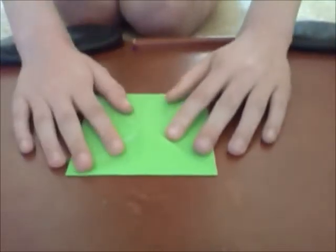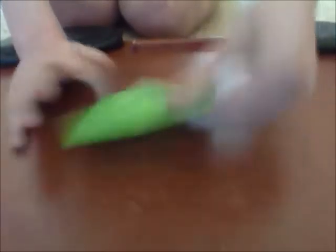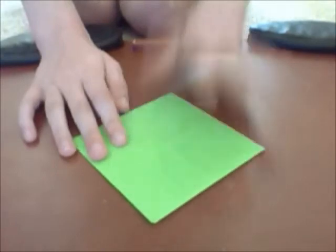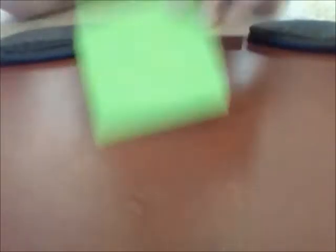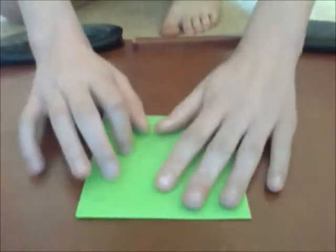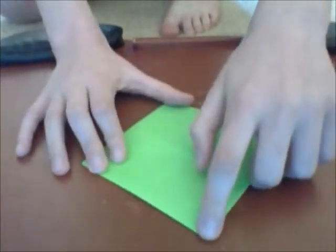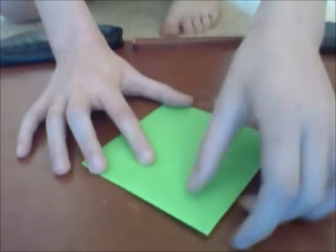Now your paper should be all one color, green on this side or whatever color you're using. So we had it like this, now flip it over. Turn it so it looks like a diamond and bring all the points into the center once again.